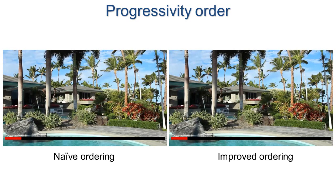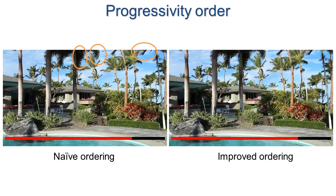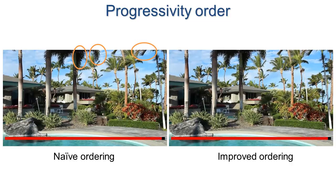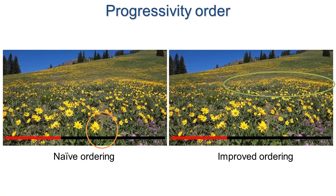With the simplest approach, loops with large changes appear early in the progressive video loop. We modify the cost function so that subtle motions appear before larger ones. The large motion of the foreground flower is delayed, whereas the subtle motion in the midrange is introduced earlier.